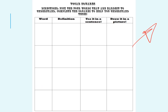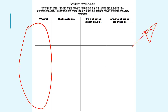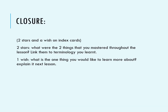I would like you to solve this activity: pick four words that were the hardest to understand and complete the squares to help you understand them. For example, if you didn't understand 'price mechanism,' write it down, write its definition, use it in a sentence, and draw a small picture. This is the end of the lesson. Make sure you write two stars and a wish — two things you mastered during the lesson and one thing you'd like us to discuss next time. Thank you guys.